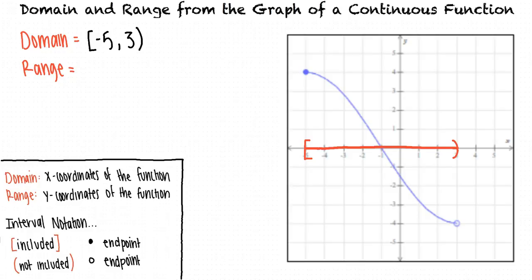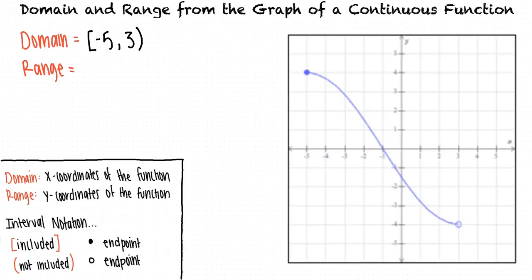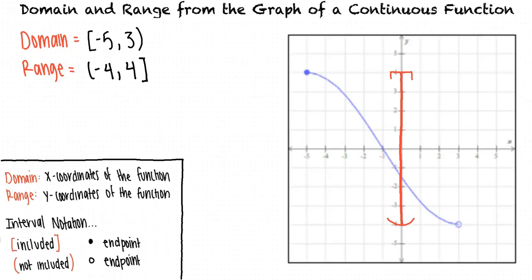To find the range, we look at the y-values included in the function. The lowest y-value is negative 4, but that's the open circle endpoint, so the y-values get really close to negative 4 without ever reaching it. The highest y-value is 4, which is included because that endpoint is filled in. So our range in interval notation is (−4, 4]. Great work!